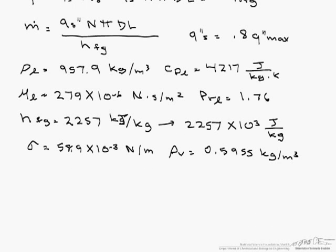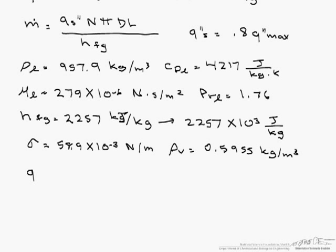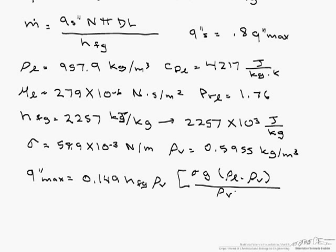The equation for the critical heat flux is 0.149 h_fg rho of the vapor times gravity times the difference in densities over the density of the vapor squared, and this is all raised to the one fourth.